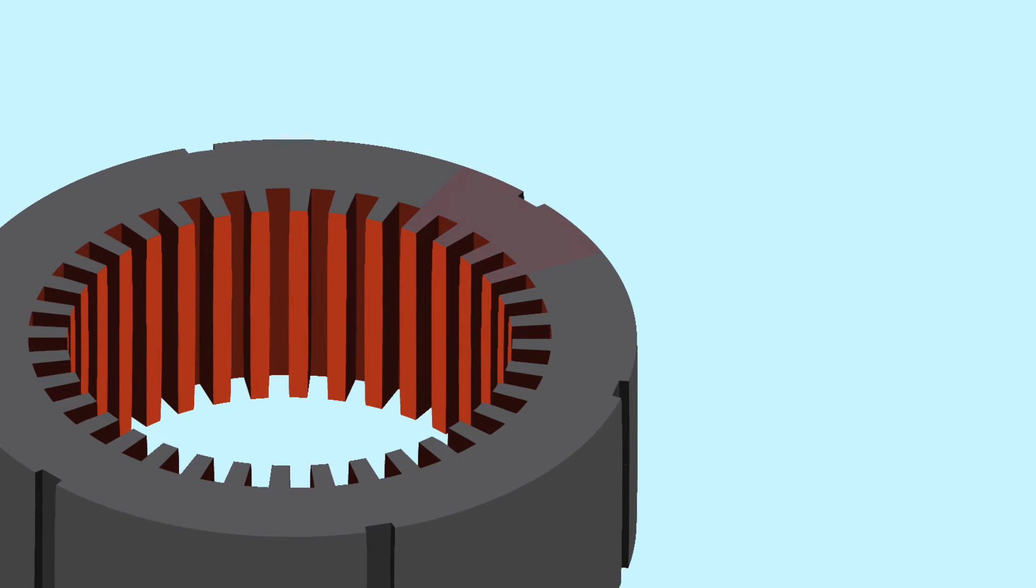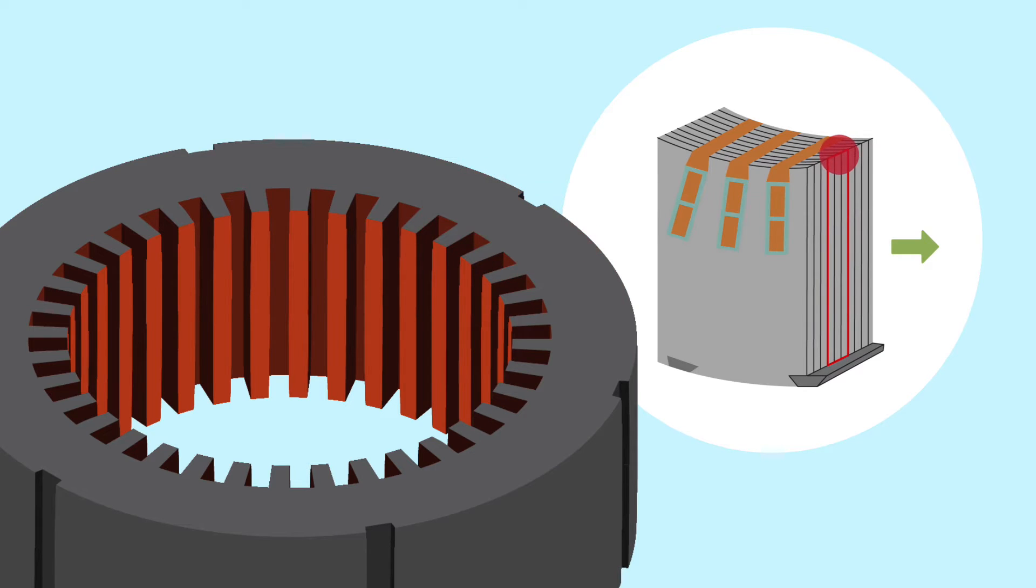A short between two or more layers lead to higher local eddy currents. This again can lead to local hotspots, which in a worst case scenario can even cause a complete damage of the machine.